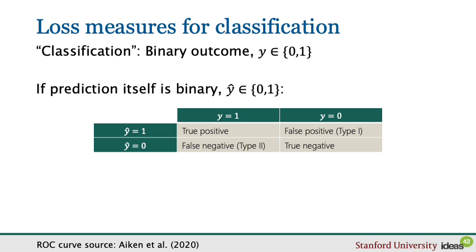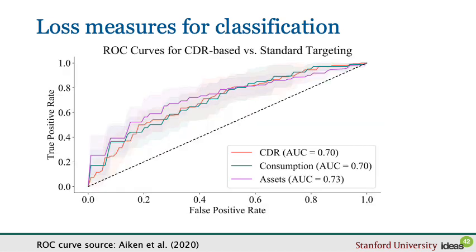If I wanted to design a loss function for classification, I could put prices on type 1 and type 2 errors, possibly informed by the specific problem, and find a classification function that minimizes that price. In many cases, we actually predict the probability of the outcome being 1. One popular way of quantifying the quality of the classification rule is to plot the receiver operating characteristic curve, with the false positive rate on the x-axis and the true positive rate on the y-axis.